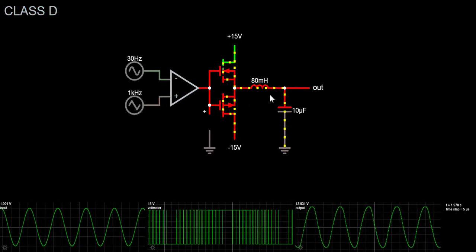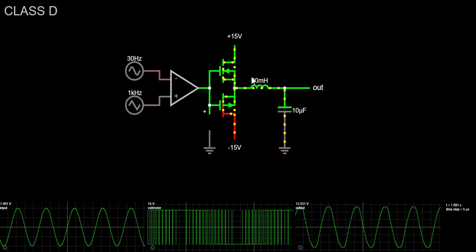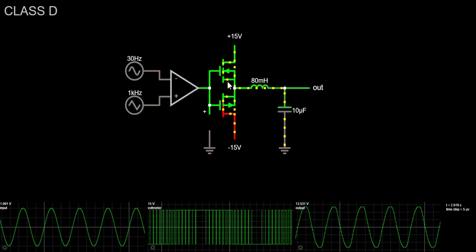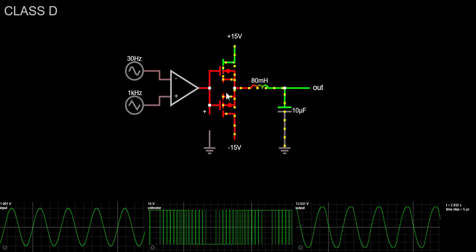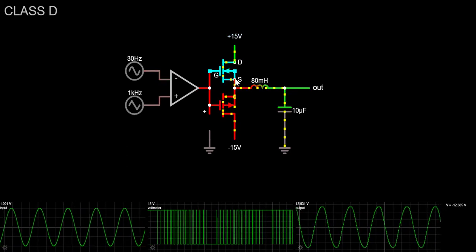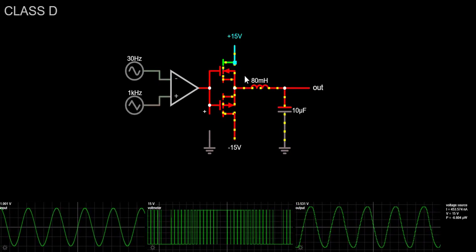This is a Class D or switching amplifier. It has the advantage of very high efficiency, because the switching transistors are either off, meaning no current passes through, or in saturation, meaning the collector-emitter voltage is nearly zero.